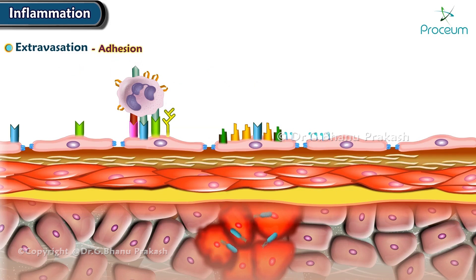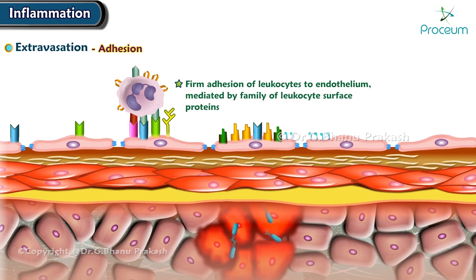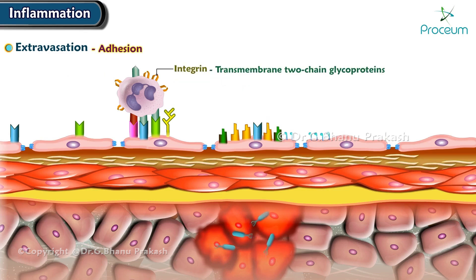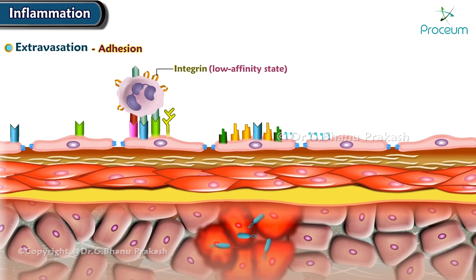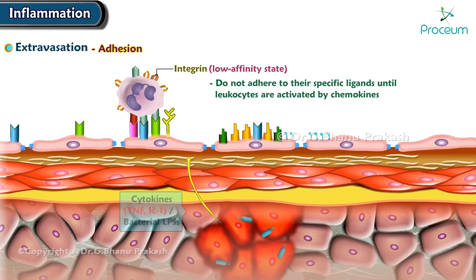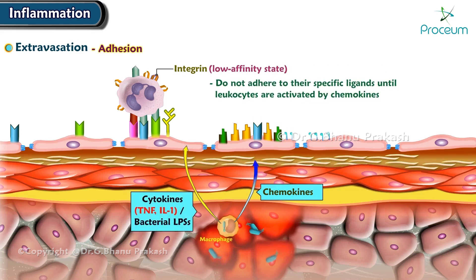Now let's talk about adhesion. Firm adhesion of leukocytes to endothelium is mediated by a family of leukocyte surface proteins called integrins. Integrins are transmembrane two-chain glycoproteins that mediate the adhesion of leukocytes to endothelium and of various cells to the extracellular matrix. In a low affinity form, they are normally expressed on leukocyte plasma membranes and do not adhere to their specific ligands until the leukocytes are activated by chemokines.